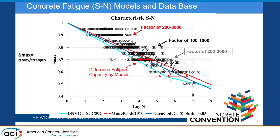We have gathered a database from previous works. This is only the characteristic SN curve, including uniaxial testing with S-min of 5% and different S-max values. The variation in results is much higher than for steel. For example, if you design based on this database, your structure might tolerate the load for one year or up to 50 years — a very wide range. We are also showing three different models: Eurocode, model code, and DNV GL, whose predictions of number of cycles also differ considerably.